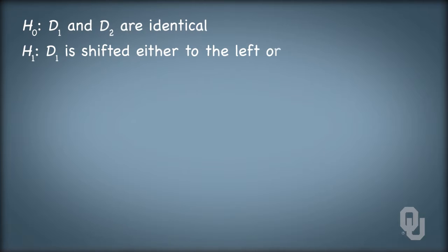One set of hypotheses that we might address would include a null hypothesis that the distributions d1 and d2 are identical. In the alternative hypothesis, d1 is shifted either to the left or to the right of d2. This would be a two-tailed test, as we're not specifying a particular direction of the shift.